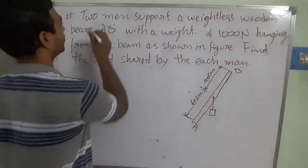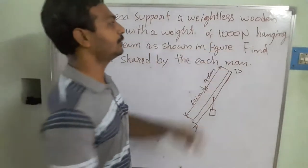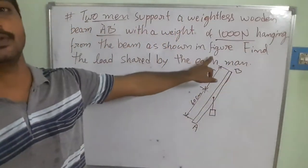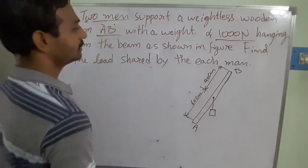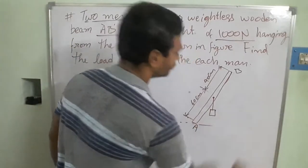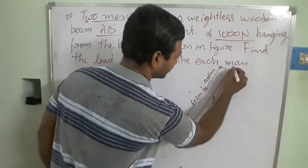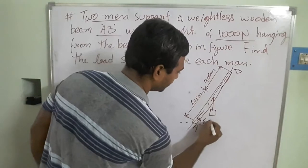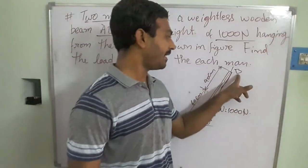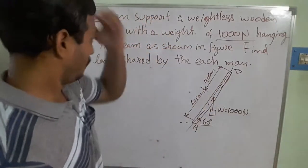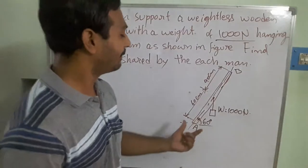The problem: two men support a weightless wooden beam AB with a weight of 1000 Newtons hanging from the beam as shown in the figure. We need to find out the load shared by each man. As shown in the figure, the beam is making 60 degrees with the horizontal. The 1000 Newton load is acting at a point 60 centimeters from A and 40 centimeters from B. We need to find the reaction forces at A and B — that is, how much load is shared by man A and man B.